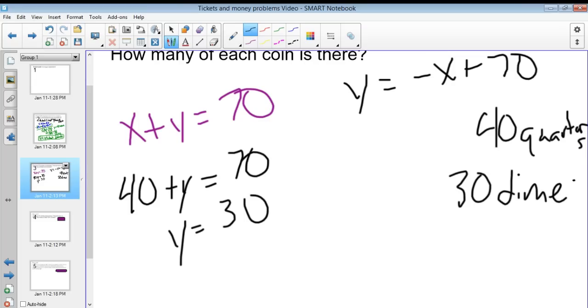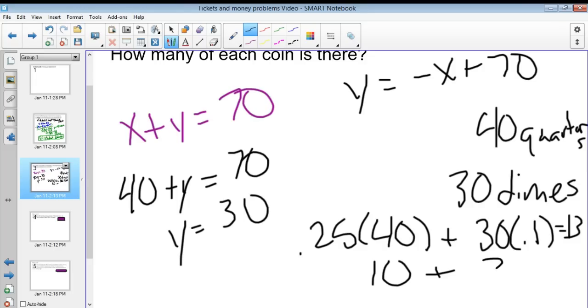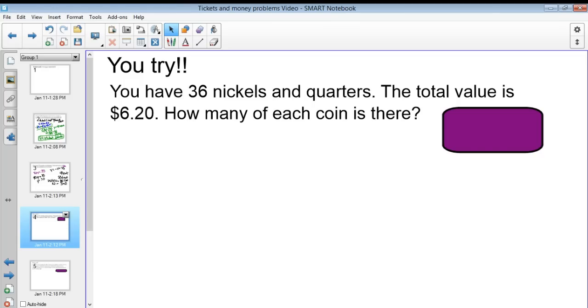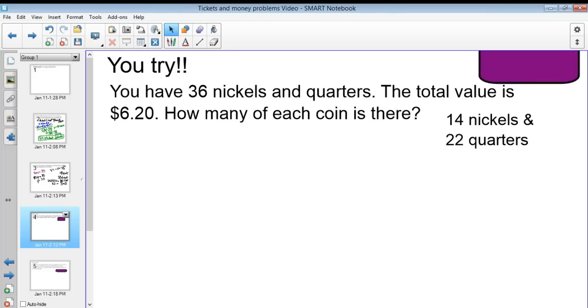If I want to check this one just to be sure, I would say 0.25 times 40 plus 30 times 0.1, and let's make sure that equals 13. 0.25 times 40 is equal to 10, and obviously that's $3, so we're right. Pause the video here. Try it on your own and come back with the answer. So you have now solved the problem. You have gotten 14 nickels and 22 quarters. If you got that right, move on. If not, stick around.